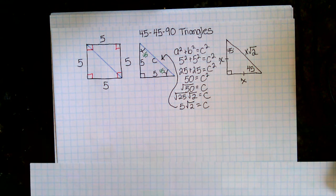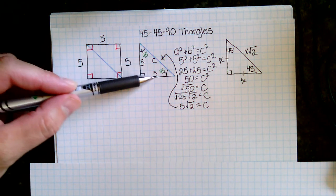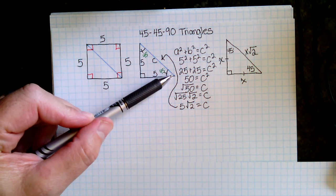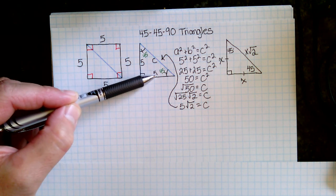Okay, and then so lastly, if you can see, I drew an arrow here. If these two sides are 5, then the diagonal, or the hypotenuse, is root 2 times whatever that side is.